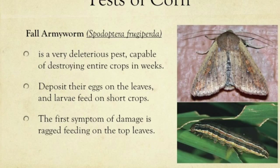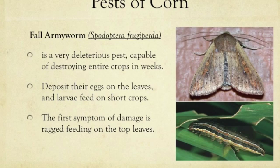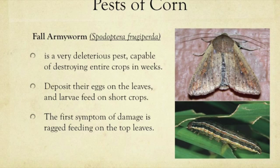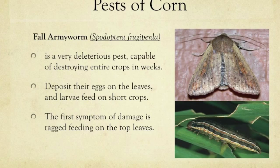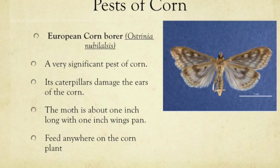They occur at very high densities during the rainy season, especially after periods of prolonged drought. During the long dry season they are very low in density. The moth lives for about 10 days and the female can lay a maximum of 1,000 eggs per lifetime. The first symptom of damage is ragged feeding on the top leaves with wet brown pellets in the area. The caterpillars hide inside the hole during the day and are usually found by unrolling the innermost leaves; at night they emerge and feed on leaf tissue.